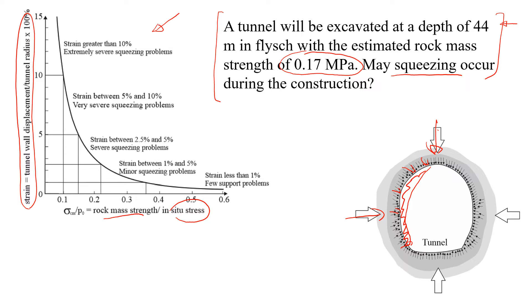You will see in this formula we need to find rock mass strength and in-situ stress. We can start with stress. In this case, rock mass strength is going to be given to us. Rock mass strength is pretty low, it's 0.17 MPa. Now let's estimate the in-situ stress.